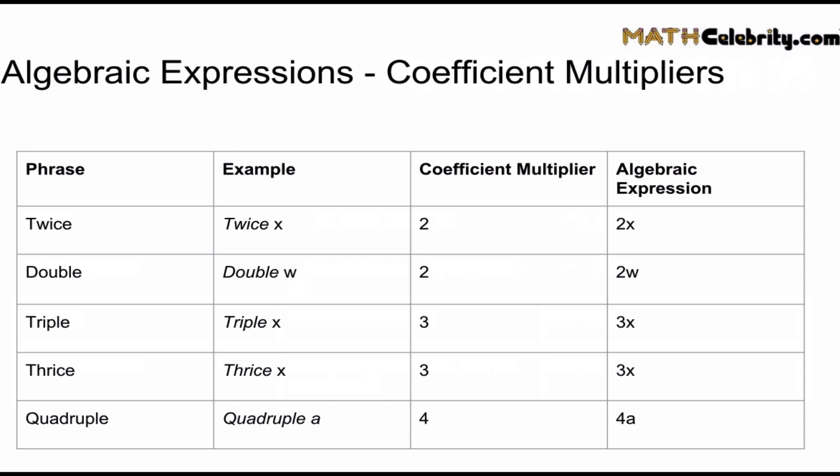Now there's one more that pops up sometimes, which is half. So there's two ways to do that. You can multiply by 0.5 or you can divide by 2.